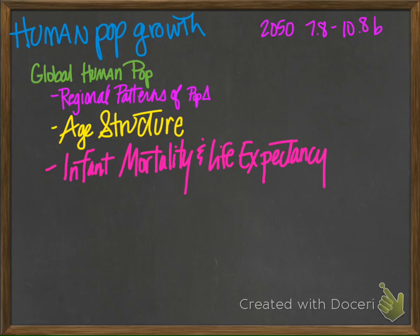The rate of growth didn't begin to slow down until the 1960s. Some reasons for our decline in growth include diseases like AIDS and voluntary population control, mainly birth control. A unique feature of the human population is our ability to control family planning. Social change and more women going to college, being educated, and having careers delays marriage and reproduction.